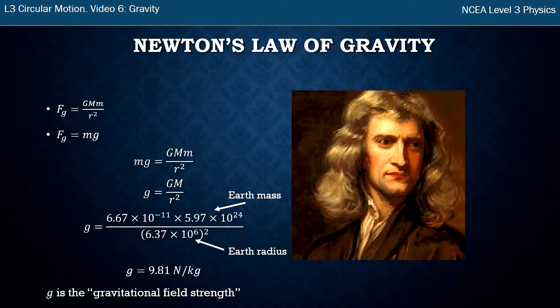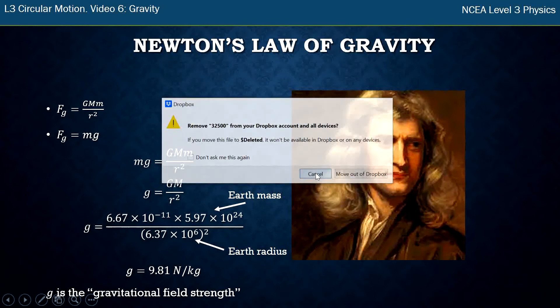If you're on the Moon, for example, you put in the Moon's mass and the Moon's radius, and that's how you get the gravitational field strength for the Moon. So this is where this 9.8 came from in the first place.